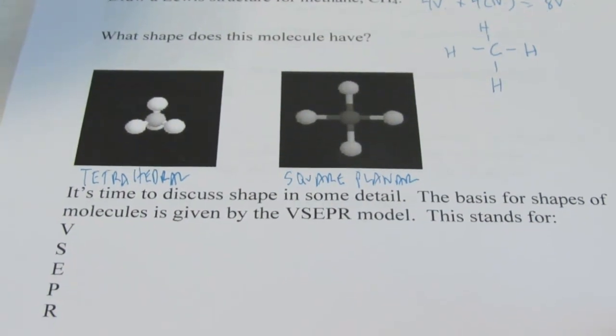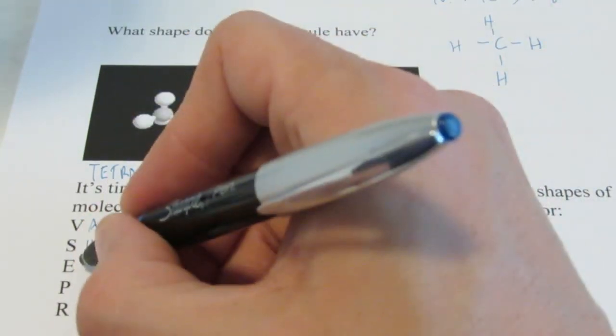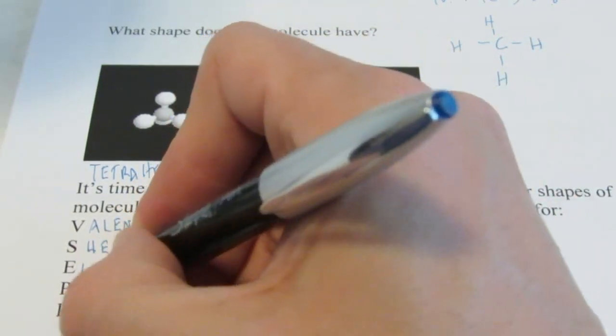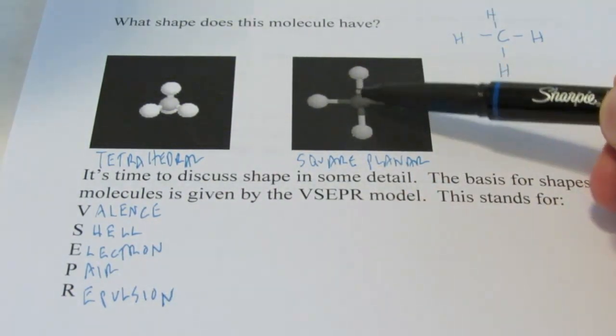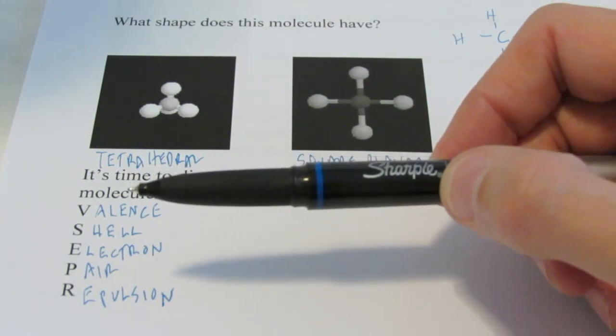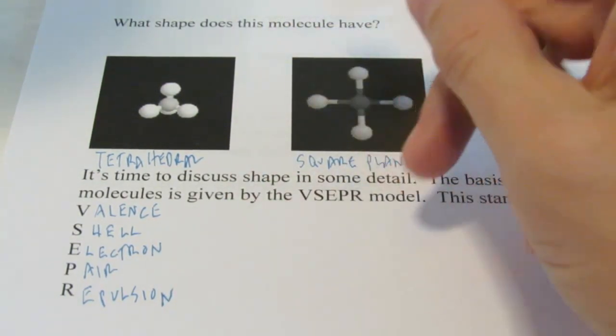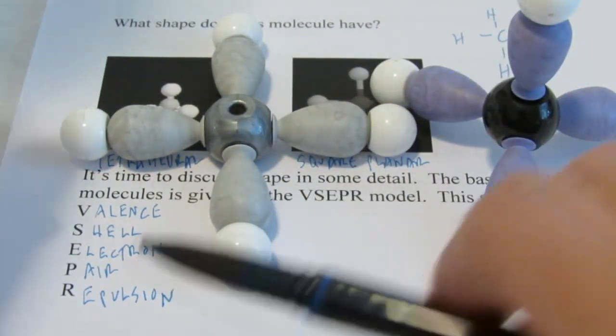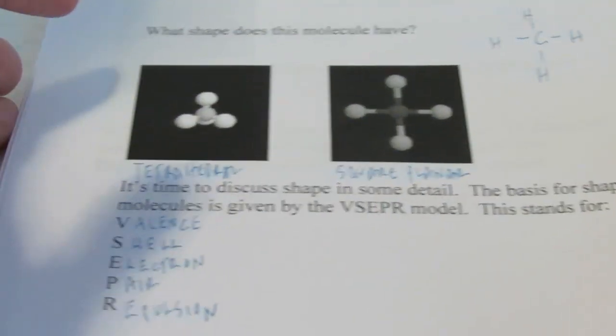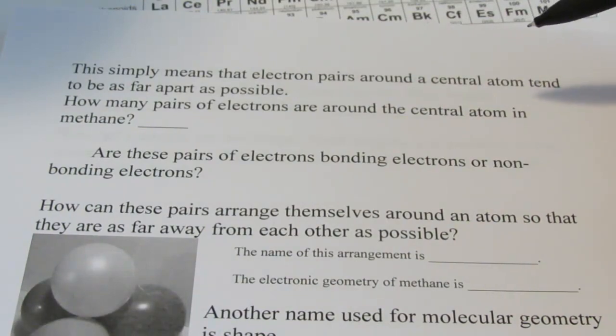Now, to do that, we are going to use something called the VSEPR model. And VSEPR, V-S-E-P-R, stands for valence shell, so we're talking about the outer electrons, the valence electrons, electron pair repulsion model. All this is saying that electron pairs, when they're bonded to a central atom, love to be as far away from each other as possible. They repel each other. They have negative charges, and two negative charges don't want to come together. They want to repel each other, but, at the same time, they're stuck to this guy in the middle. So, they want to get as far away from each other as they possibly can, while being stuck to that central atom. And this valence shell, electron pair repulsion model, helps us determine how they will arrange themselves. So, this simply means that electron pairs around the central atom tend to be as far away from each other as possible.